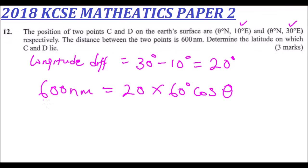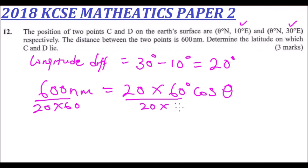Once you divide both sides by 20 times 60, that gives us one half — that is, 0.5.